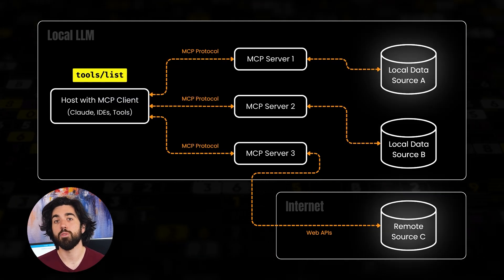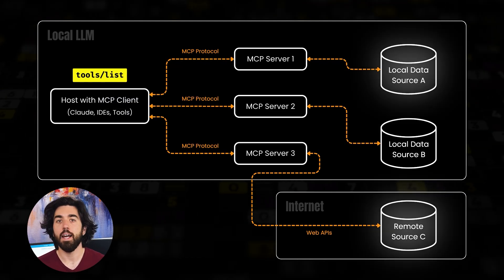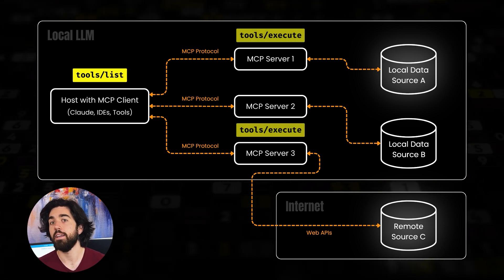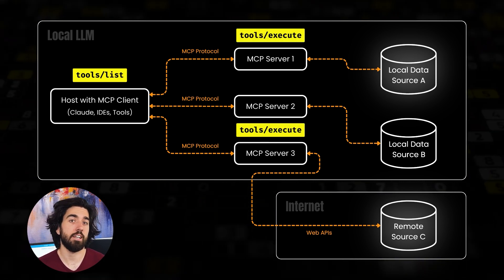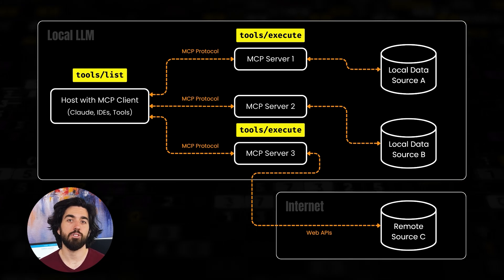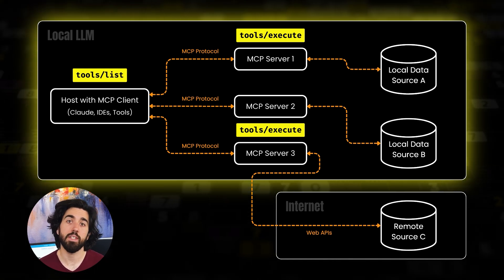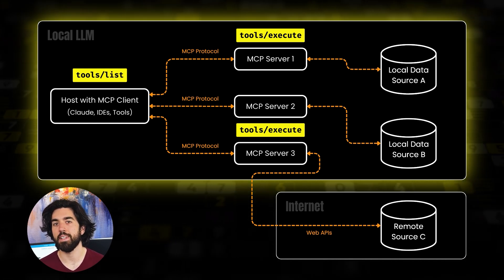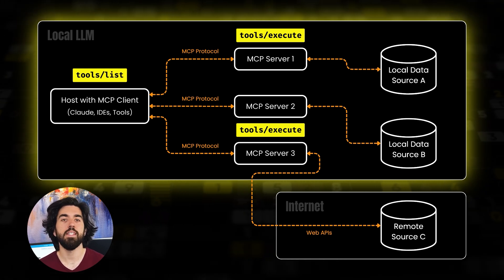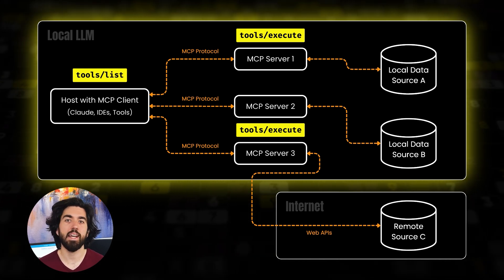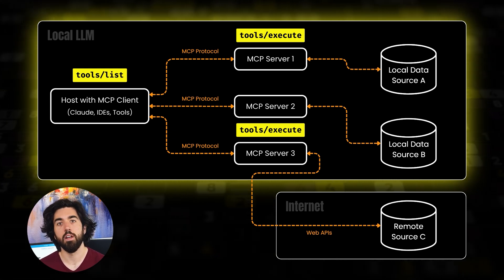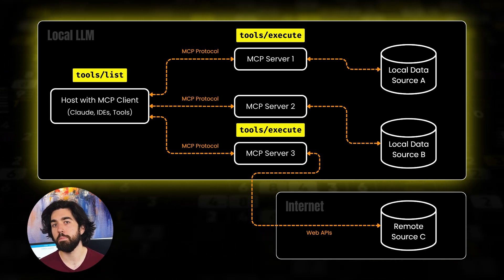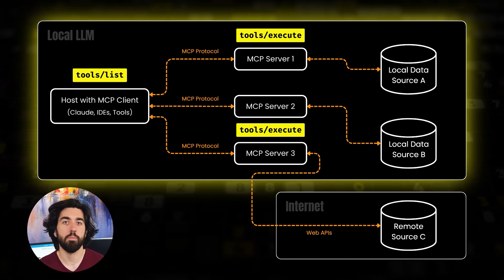The LLM chooses one or chains several, passing the chosen tool name plus arguments to the MCP client, and the client invokes tools/execute. The results are streamed back, get folded into the model's context, and the final answer is generated to the user. In short, MCP slots cleanly into existing HTTP infrastructure — one lightweight client beside the model, many purpose-built servers behind standard web ports.